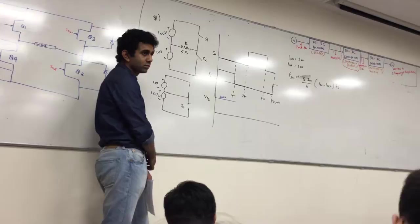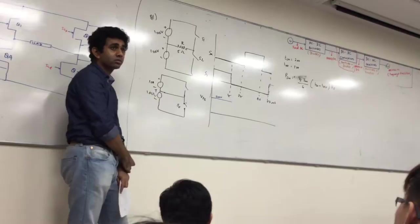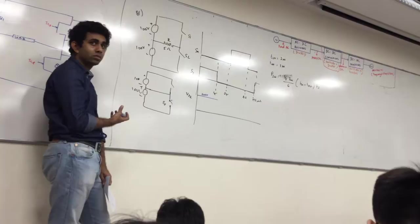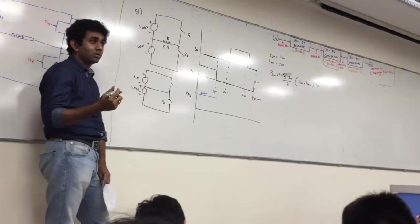In the next section, switch one is off. So at that point, what happens to my VS2? Zero — sure, zero means the switch is on. It's going to be 100 volts.